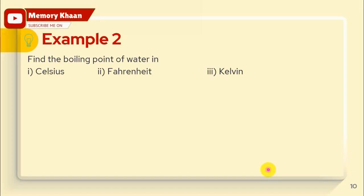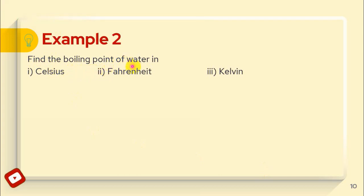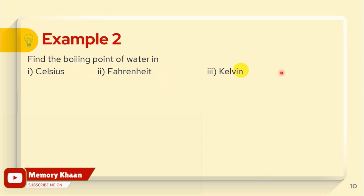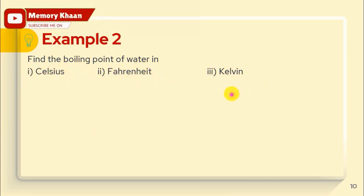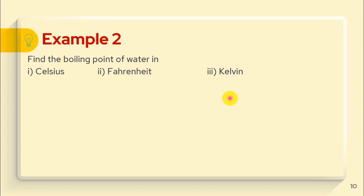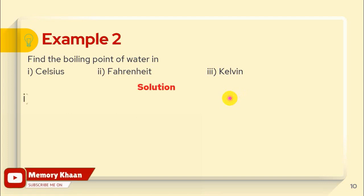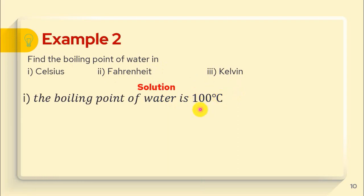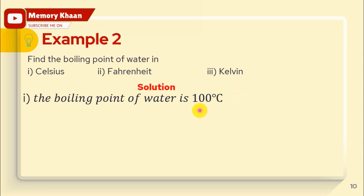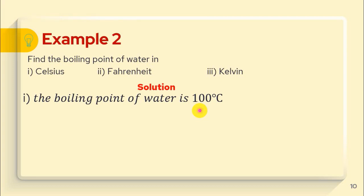For example, we are going to find the boiling point of water in Celsius, Fahrenheit, and Kelvin. The boiling point of water in Celsius — we call it centigrade — requires finding the temperature of water. We are going to find Celsius, Fahrenheit, and Kelvin for the boiling point of water.